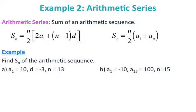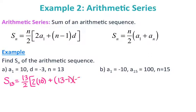For letter A, I have the first term, the common difference, and the number of terms, so I use the first formula. With N equal to 13, I have S13 equals 13 over 2 times the quantity 2 times 10 plus (13 minus 1) times negative 3. Plugging that entire expression into the calculator gives negative 104.